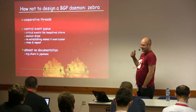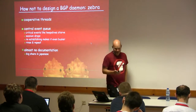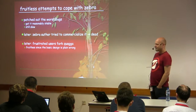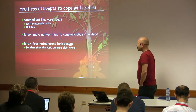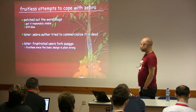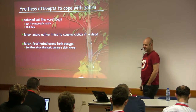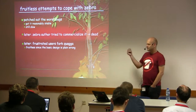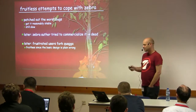Next big problem: there was almost no documentation. The little bit that existed was in Japanese, and my Japanese is not very good. Even the comments in the source code are partially Japanese. I found and fixed the worst bugs — the ones that really disturbed daily operations most — and got it to a reasonably stable state where it was still slow as hell. Throwing hardware at the problem was not an option. Later, the Zebra author tried to commercialize it, which ended like it usually does with open-source software — it died. The most frustrated users forked Quagga, but since the basic design is so wrong, it has no chance of working.